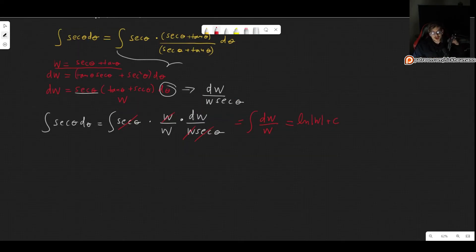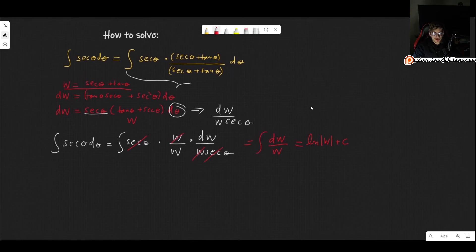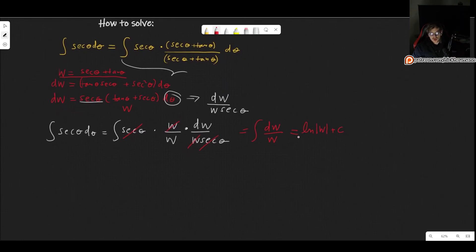But of course, we are not ready just yet because this is in terms of w and we want this to be in terms of our initial expression, which here includes this theta. So what we need to do is go back to our substitution, w is equal to the secant of theta plus tangent of theta. So this means that our expression is natural log of the absolute value of secant of theta plus tangent of theta plus some constant. So there we go.